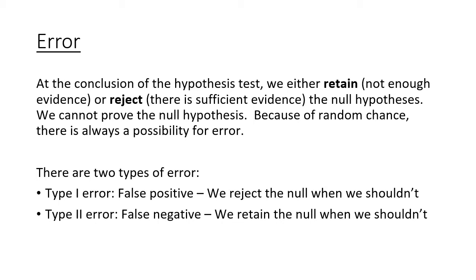A Type 1 error is a false positive — that's when we reject our null when we shouldn't. Due to random chance, sometimes your sample will show that when it shouldn't, and that would be a Type 1 error. A Type 2 error is a false negative — that's when we retain the null when we shouldn't. We collect our data, there's not enough evidence to overturn the null hypothesis, but in reality, if we had chosen a different sample, we should have overturned it.